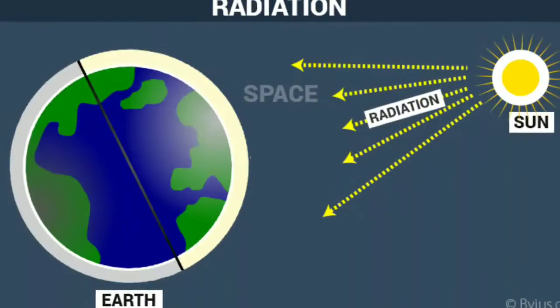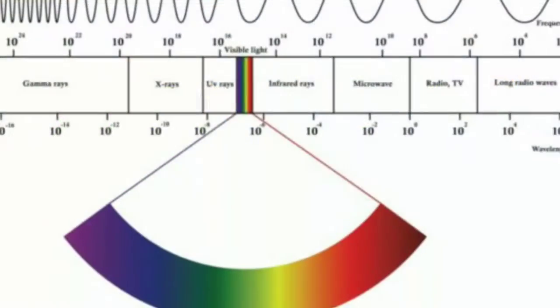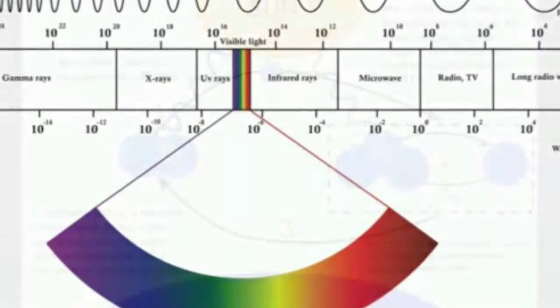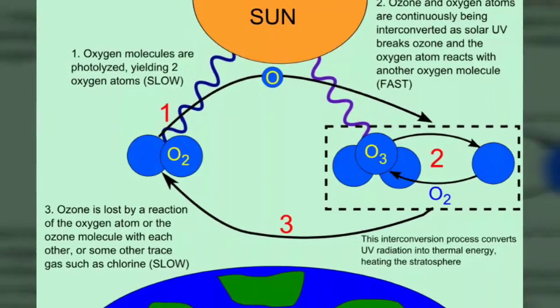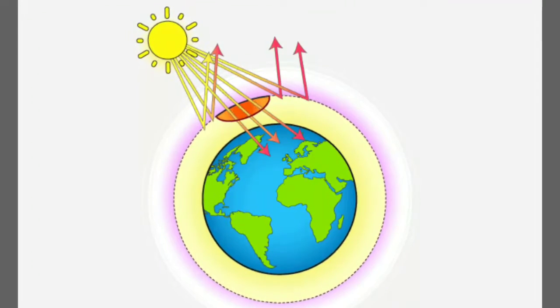Other sources include x-rays from medical radiography examinations and muons, mesons, positrons, neutrons and other particles that constitute the secondary cosmic rays that are produced after primary cosmic rays interact with Earth's atmosphere.